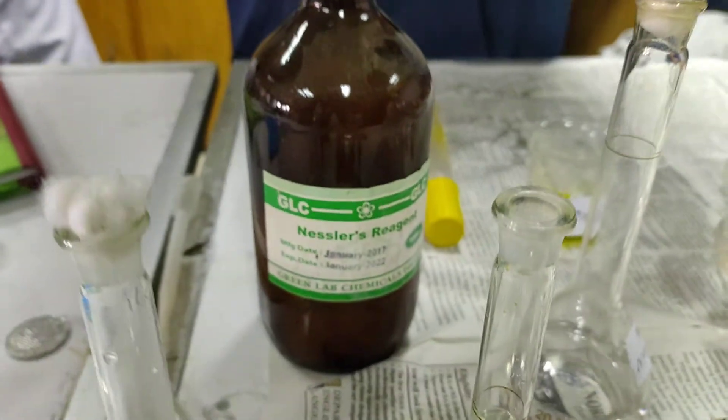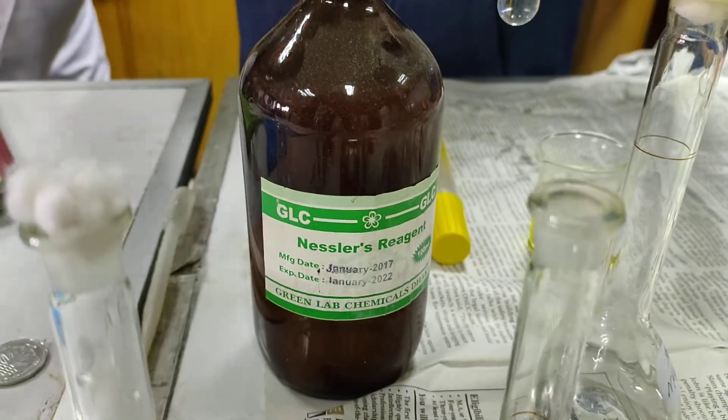Into this sample solution, we are going to add Nessler reagent. This Nessler reagent will cause brown precipitation.